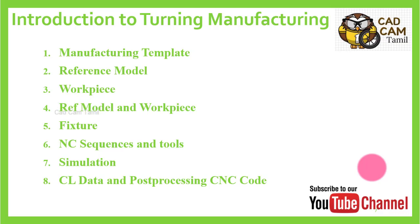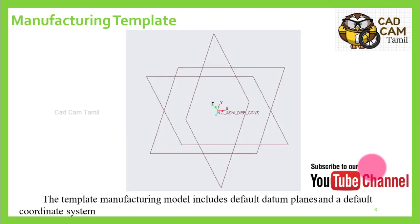In detail, what we will see in this video: first, Manufacturing template. We will see the part, drafting, and assembly. If you want to see the playlist, check the link in the description. The default template — this is a default template. It includes front, right, and left planes, so three planes with a coordinate system.